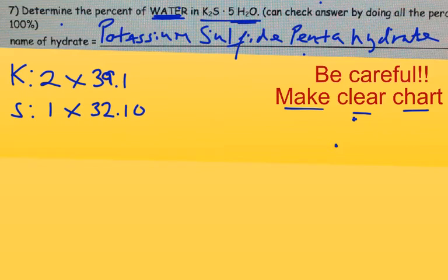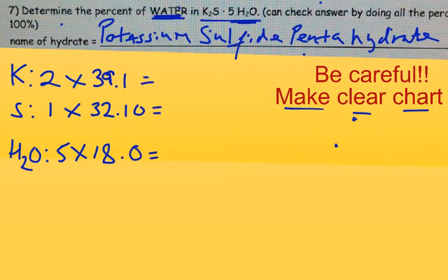The waters, right? We're not going to split them apart. We will simply say for water, we have five of them, each with a mass of 18.0. And we'll do the math on that. So you have a calculator that's handy. Two times 39.1 is 78.2. One times 32.1 is 32.1. And five times 18 is 90.